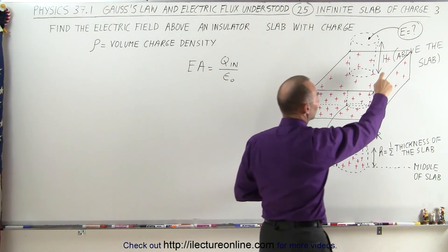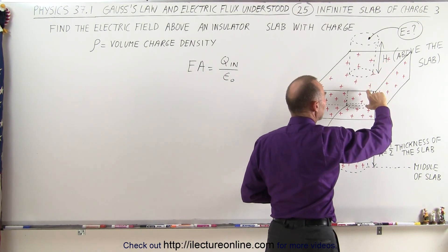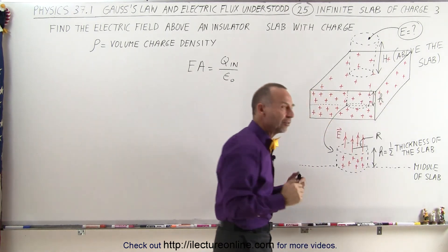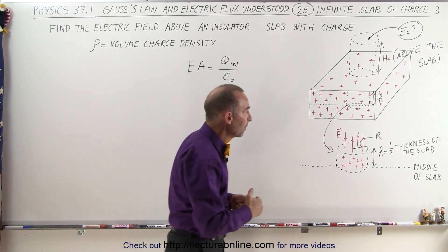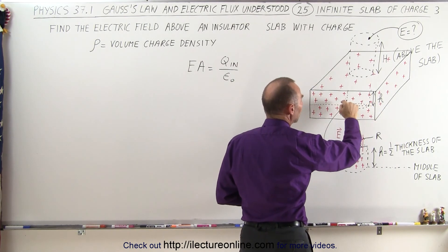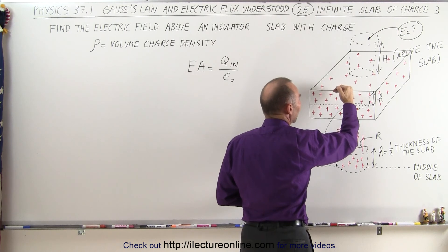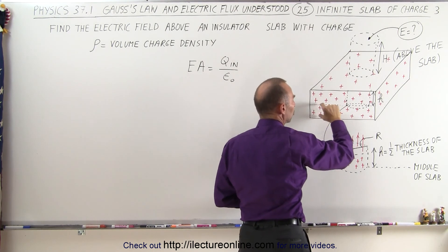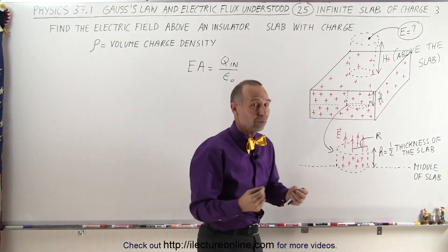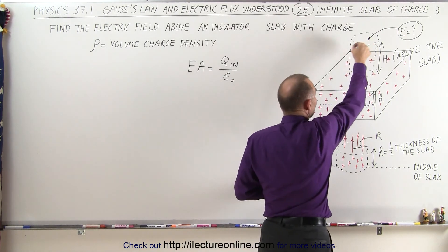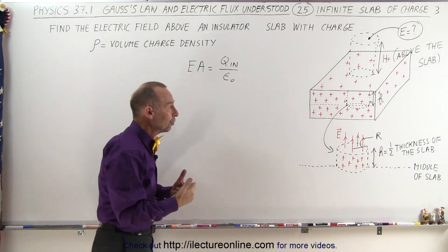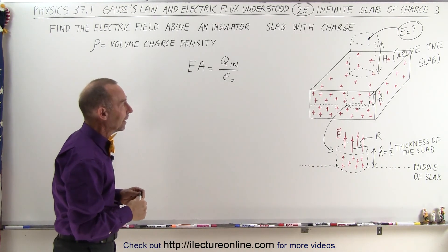The distance above the slab is capital H, and the thickness of the slab is 2H, so H is half the thickness of the slab. Half the thickness is important because at the very center of the slab there is no electric field. Only the charges above the center affect the electric field in the upward direction, and only charges below the center affect it in a downward direction. Since we're looking for the electric field above the slab, we're only concerned about the charges in the top half.